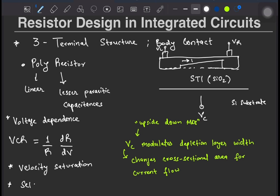Resistors in ICs are actually non-linear because they are prone to higher order effects like velocity saturation and self-heating.